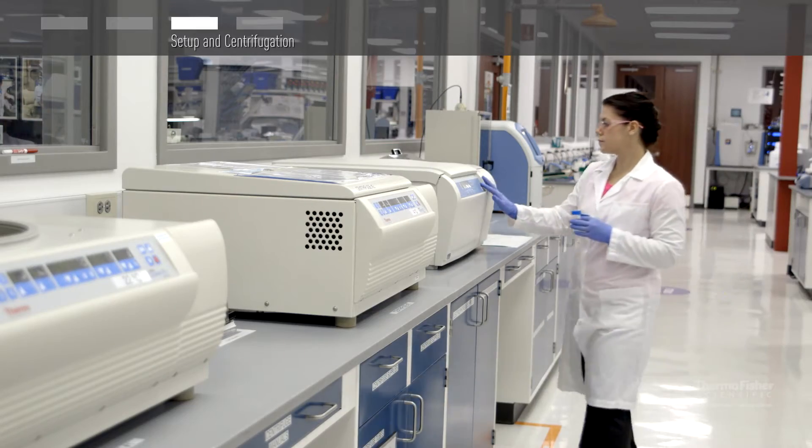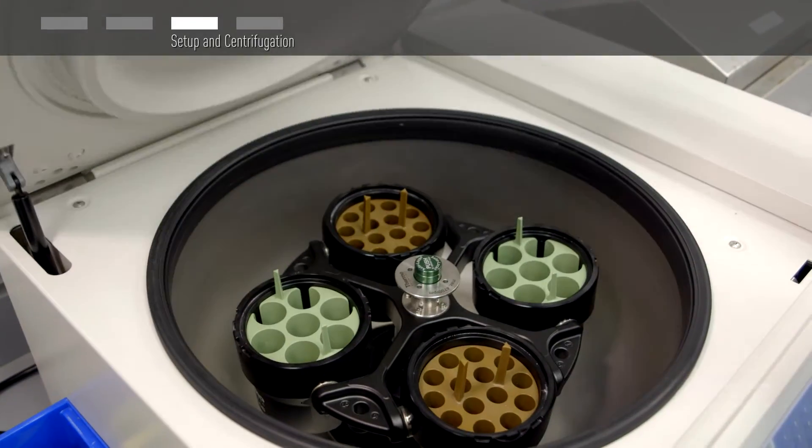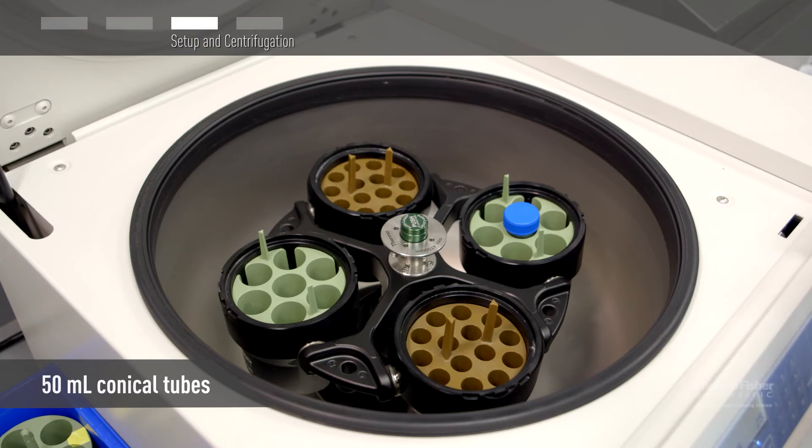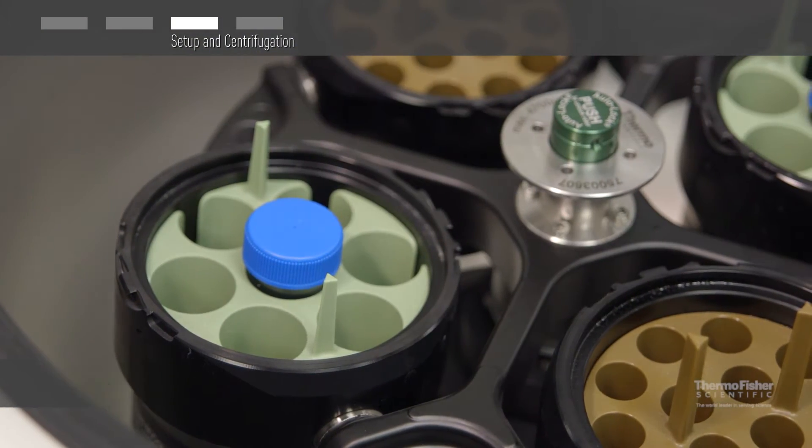Place the concentrator into a swinging bucket rotor as shown here or a fixed angle rotor that accommodates 50 mL conical tubes. Make sure that the concentrator has a proper counterbalance.